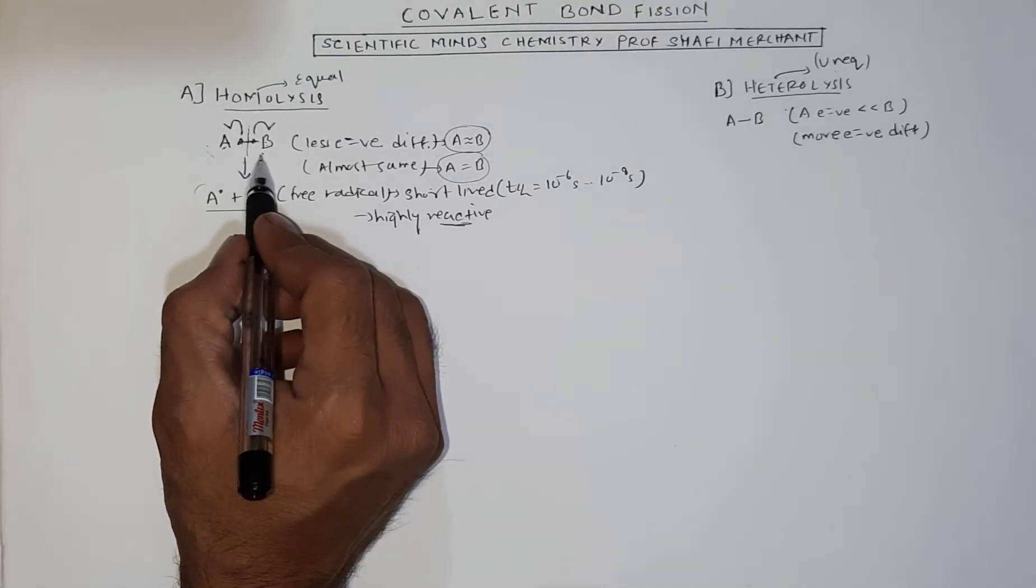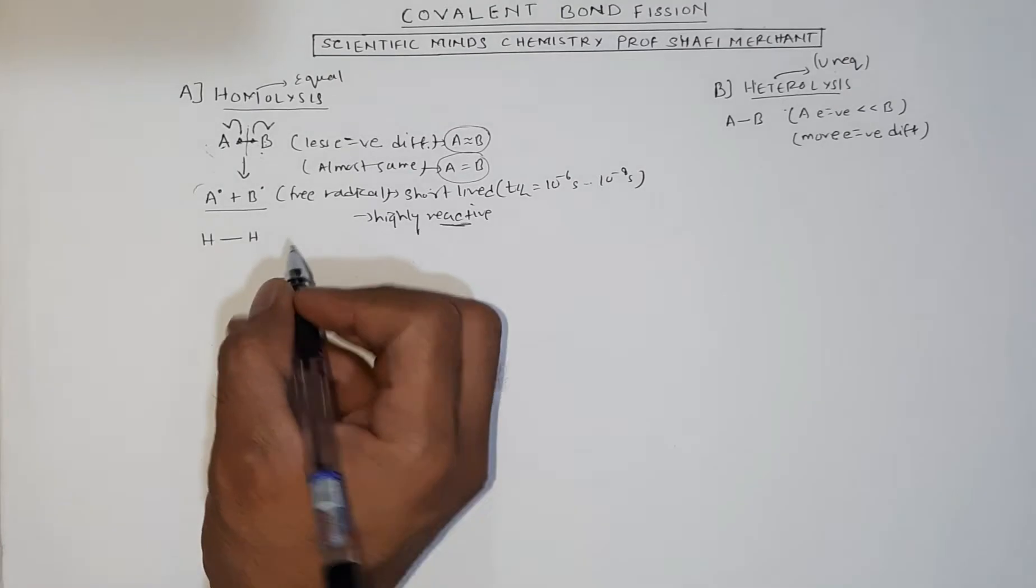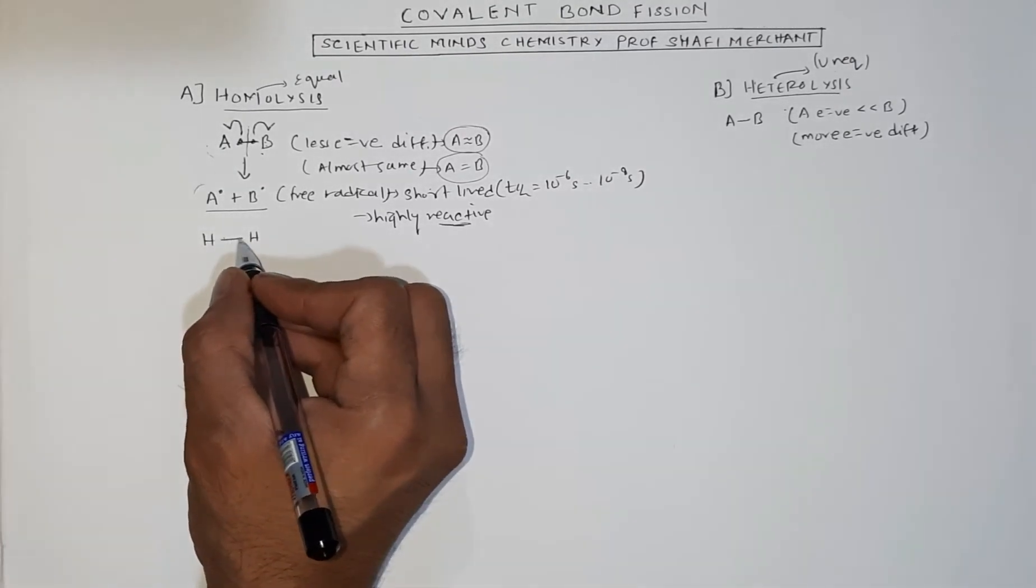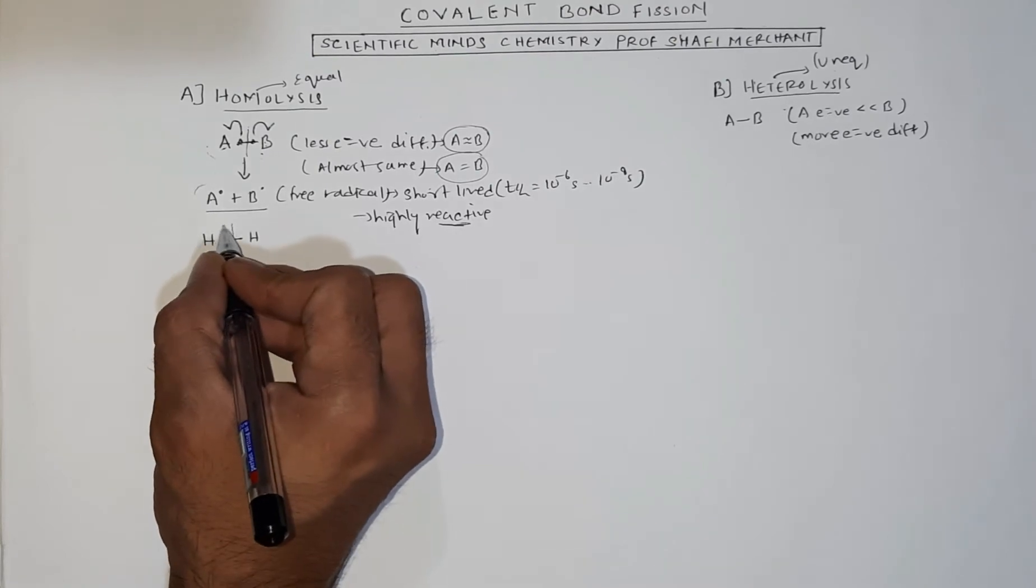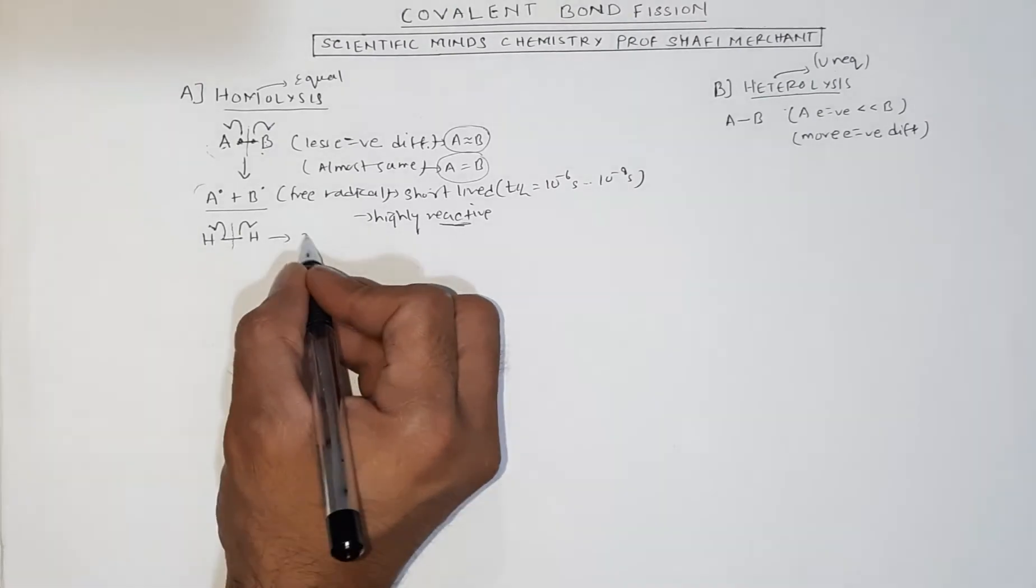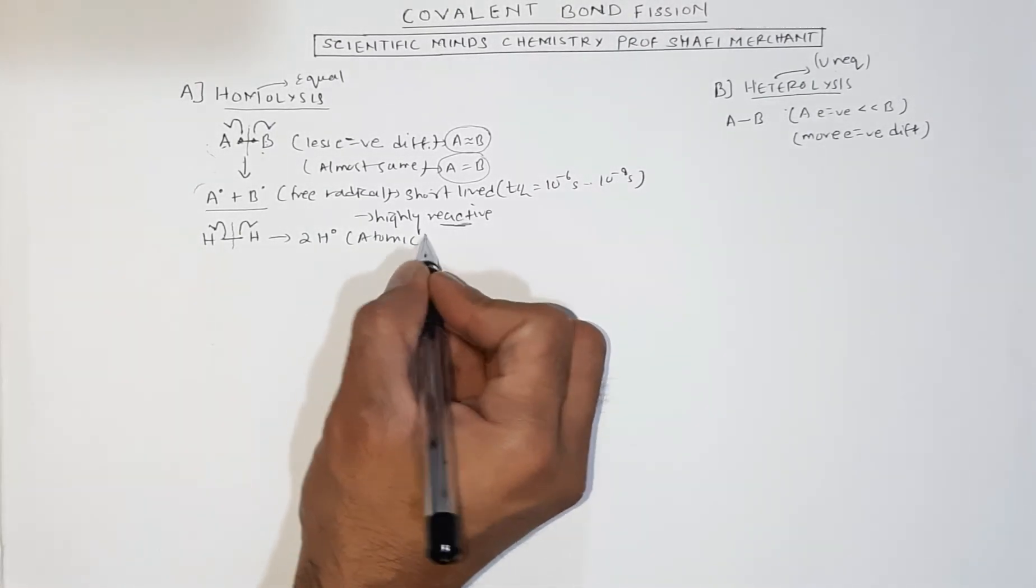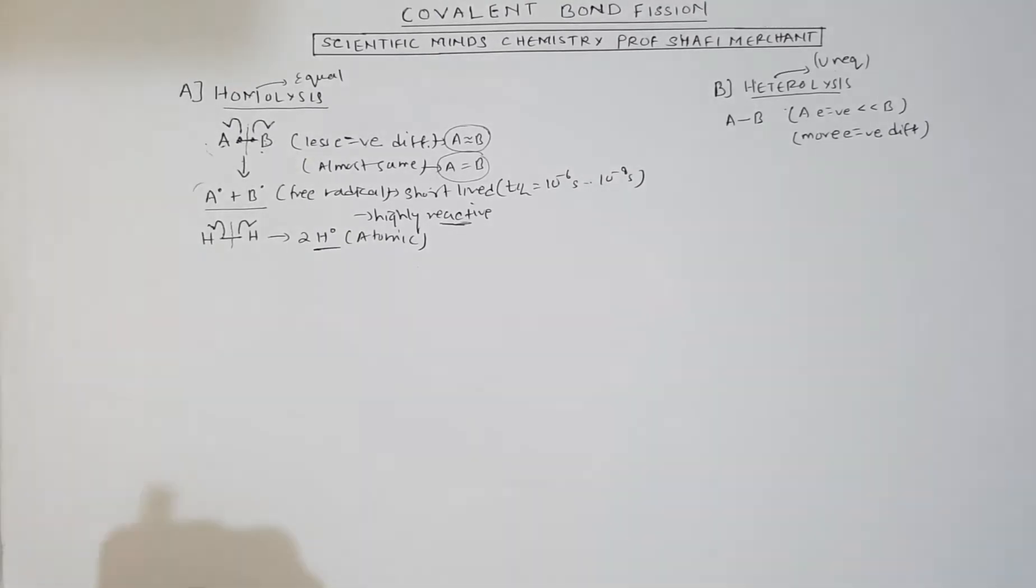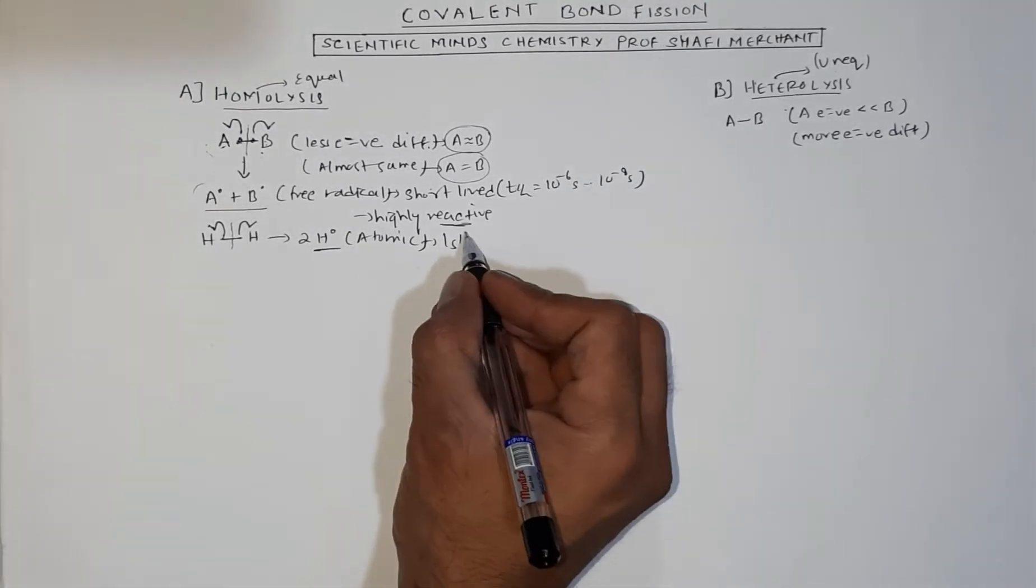When the bond breaks equally, let's take an example. Suppose I take hydrogen atom bonded to another hydrogen atom. It's a covalent bond. If I break it homolytically, one electron goes to this hydrogen, one electron goes to that hydrogen. This forms hydrogen free radical or basically the atomic form with configuration 1s1.